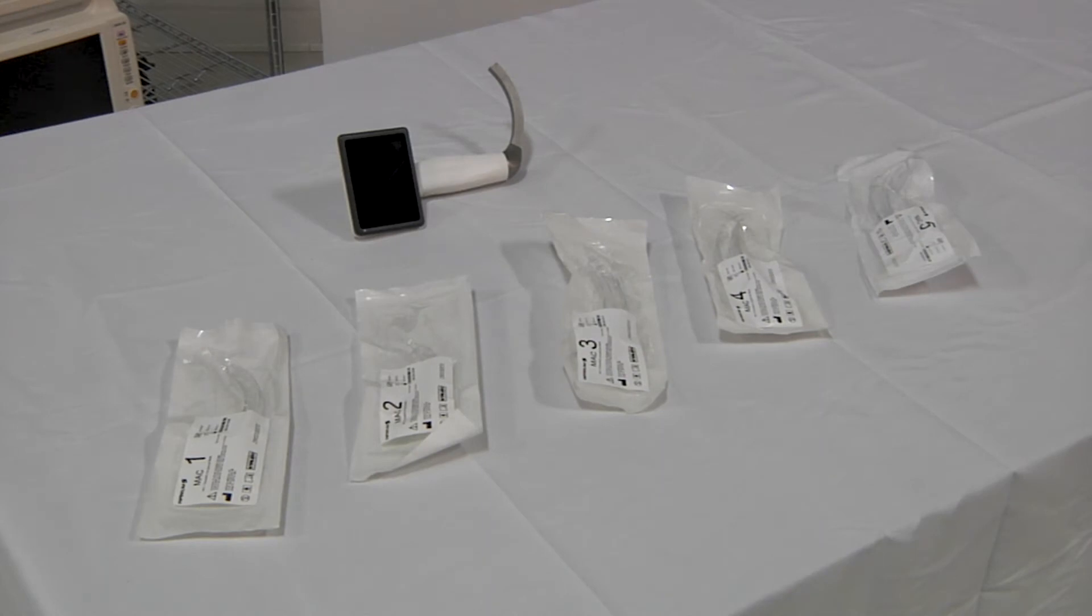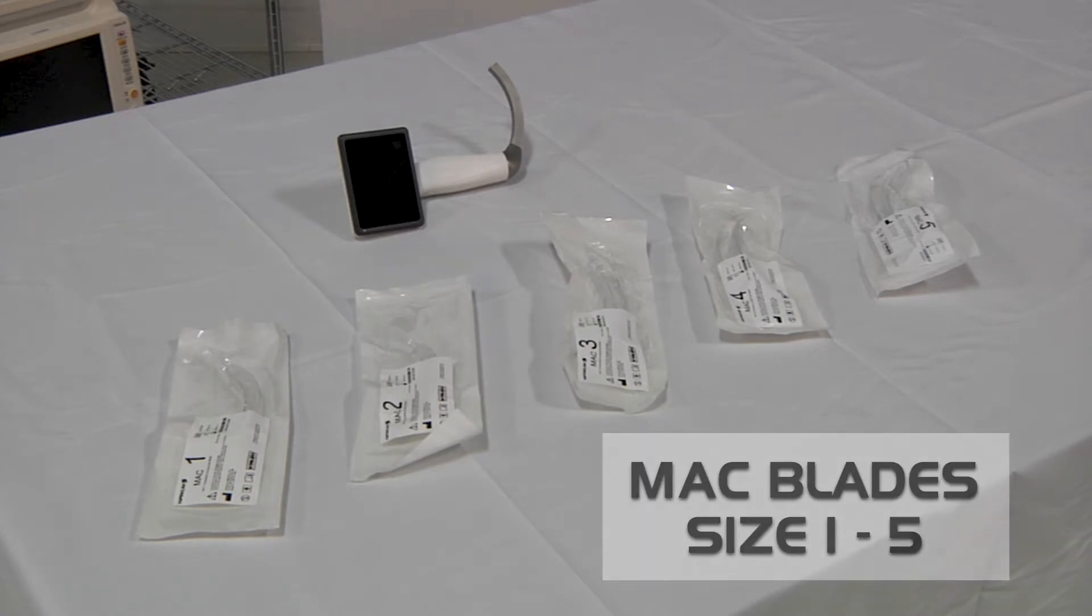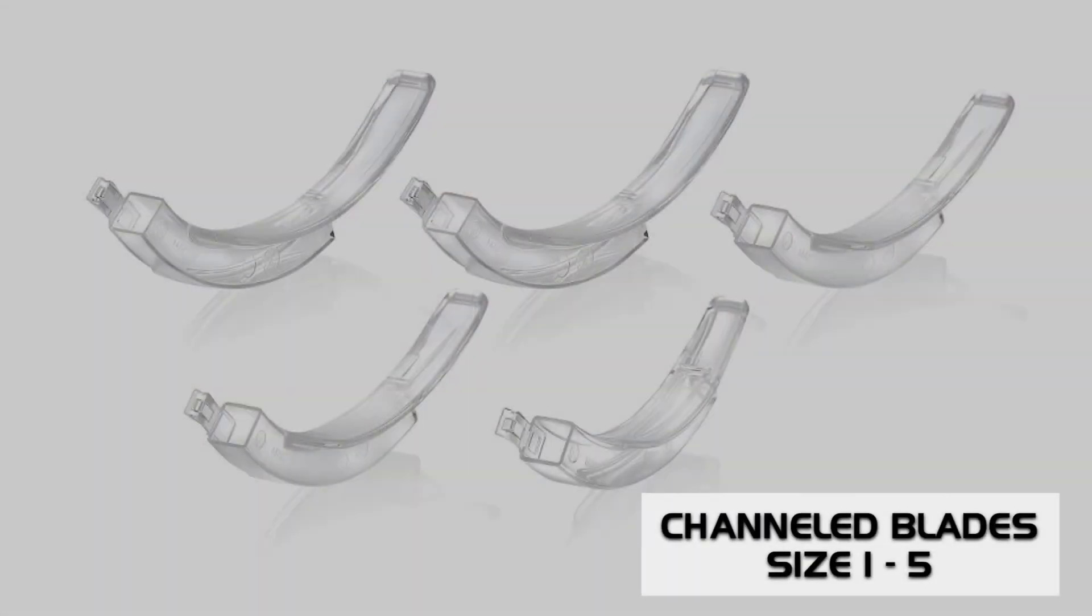This is the main unit of a laryngoscope using disposable blade covers. We have 10 blade cover sizes available: MAC size 1 through 5 and channeled blades size 1 through 5.